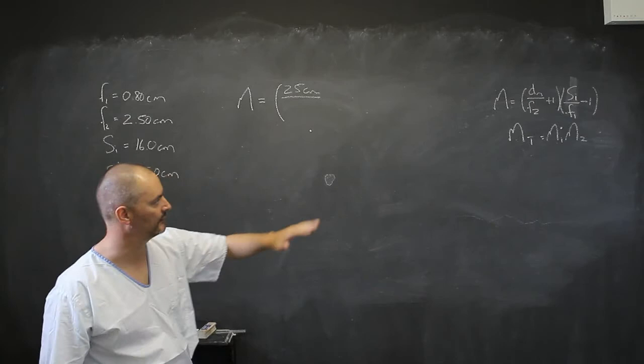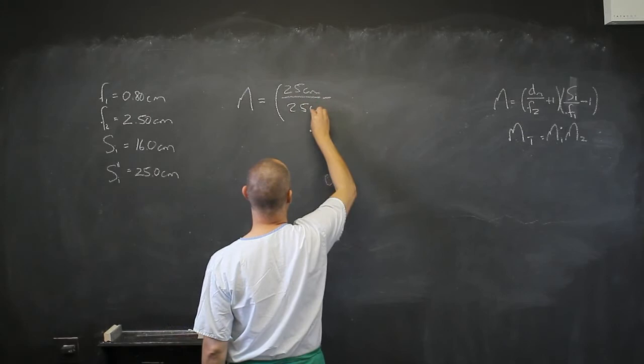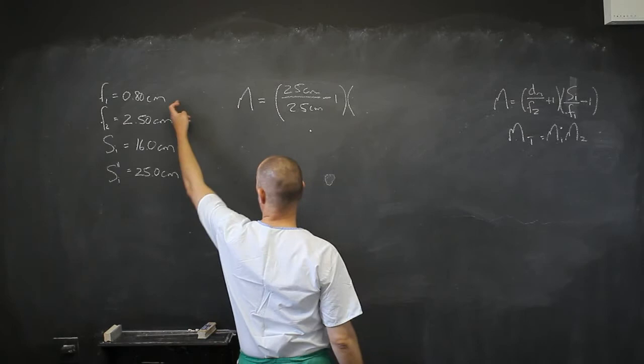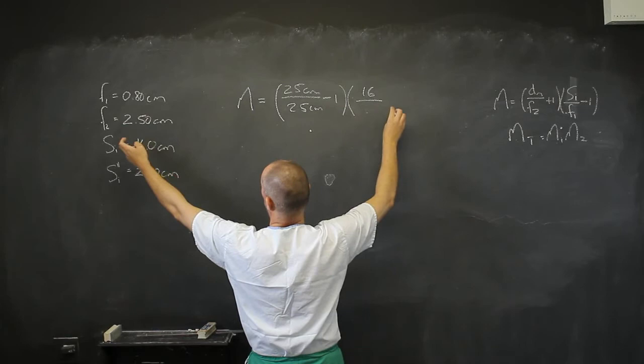F2 for me is going to be 2.5, and I'm going to have centimeters, and I'm going to have negative 1, and then I'm going to have, now the first objective lens forms its image at 16, divided by its focal length, which is, have I got that one? Its focal length is 0.8.